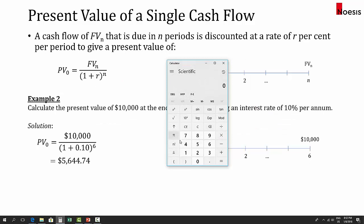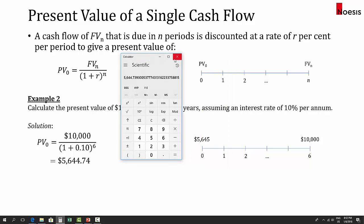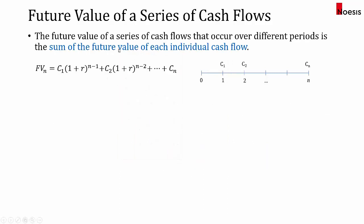On the calculator, enter 10,000, then divide by open bracket, 1 plus 0.1, close bracket, to the power of 6, equals $5,645.